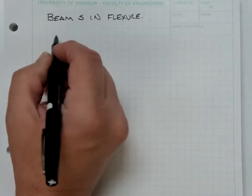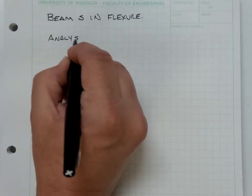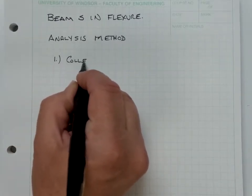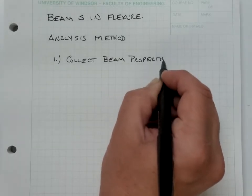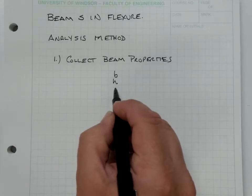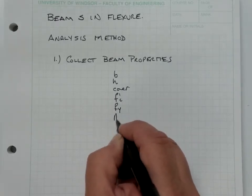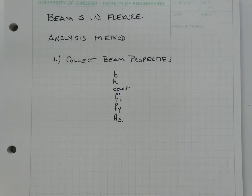We learned last time that we have an analysis method. That method was very straightforward. First, we collect our beam properties: the width, the depth, the cover, the compressive strength of the concrete, the yield strength of the steel, and the area of the steel. We collect all of these properties from a drawing, because we're only analyzing someone else's beam.